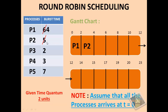P2 will execute for 2 units of time and will be left with 3 units. Similarly for P3, which has a burst time of 2 — equivalent to the time quantum — so it will execute for 2 units and be removed from the ready queue as it has completed its execution. Next is P4 with a burst time of 3 units; it will execute for 2 units and be left with 1 unit. Note that all processes that are not yet finished are put back in the ready queue.